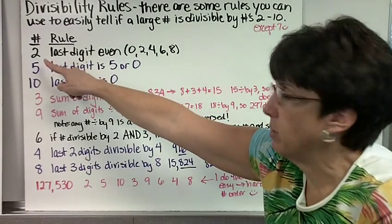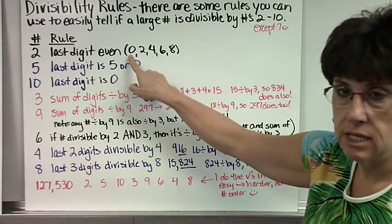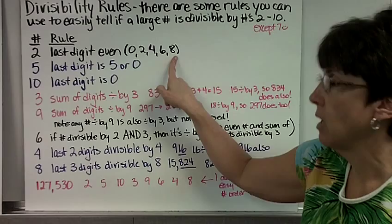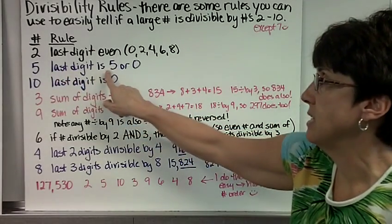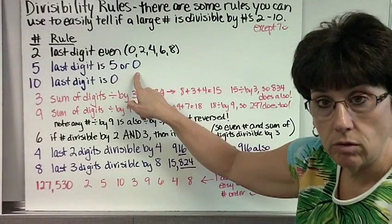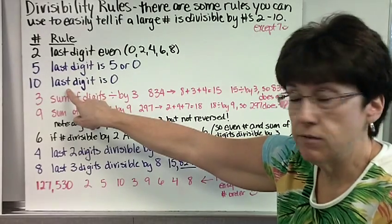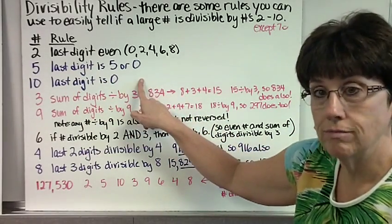So to see if a number is divisible by 2, you just check is the last digit even. Does it end in a 0, 2, 4, 6, or 8? Is the number divisible by 5? Well, it is if the last digit is a 5 or a 0. Is the number divisible by 10? It is if the last digit is a 0. These, I think, are the three easiest to do.